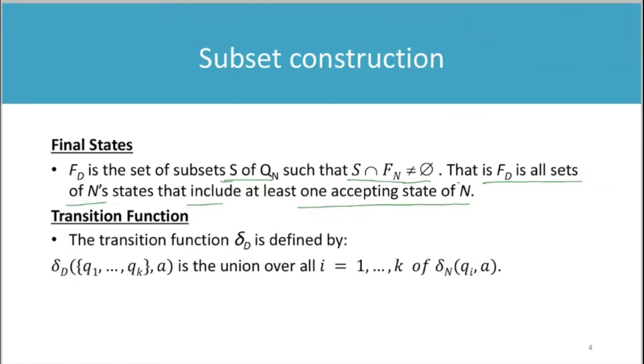So we will understand this in detail again when we convert. The transition function delta D—that is, the transition function of DFA—is defined by: delta D of a set of states equals the union over all i equals 1 to k of delta N(qi, a).